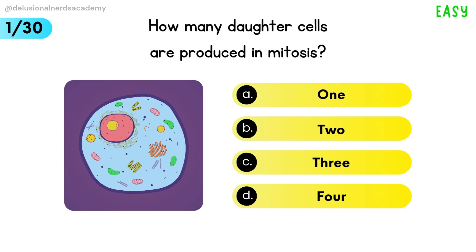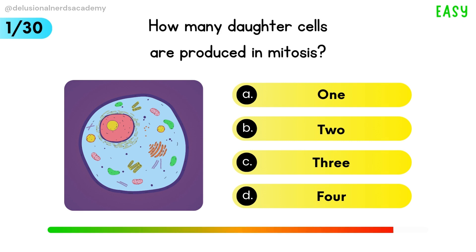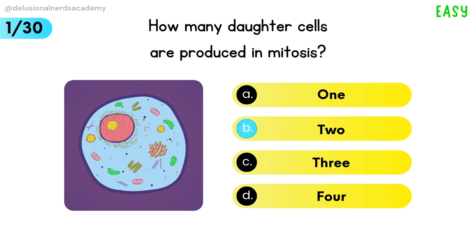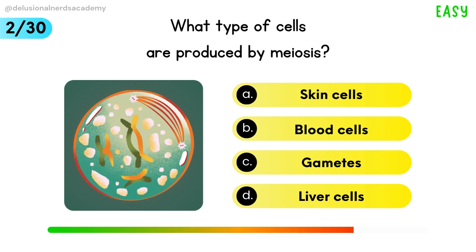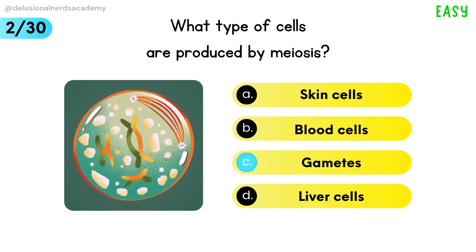How many daughter cells are produced in mitosis? The answer is two. What type of cells are produced by meiosis? Gametes is the correct option.